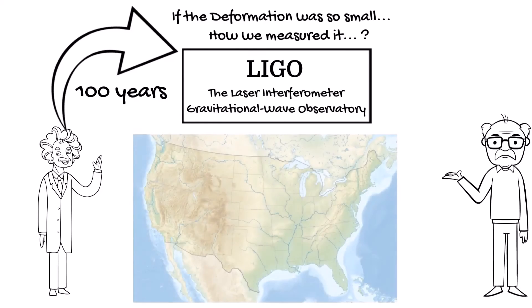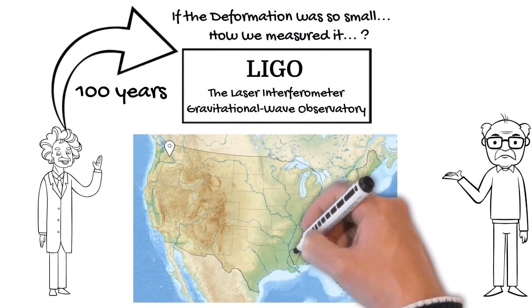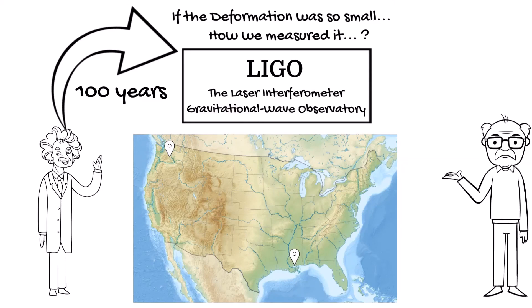Two observatories located in Hanford, Washington and Livingston, Louisiana were built from 1994 to 2002.